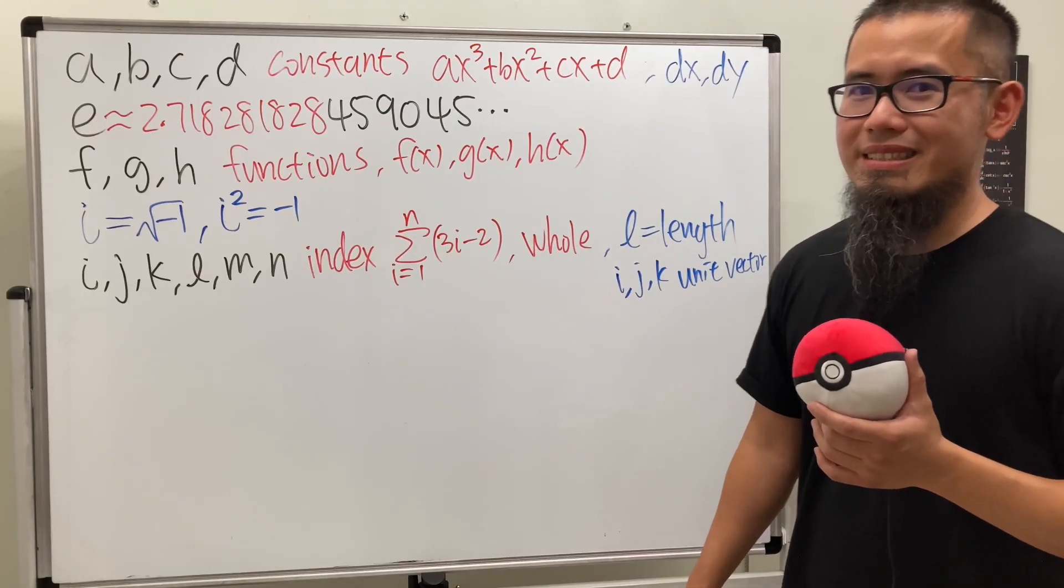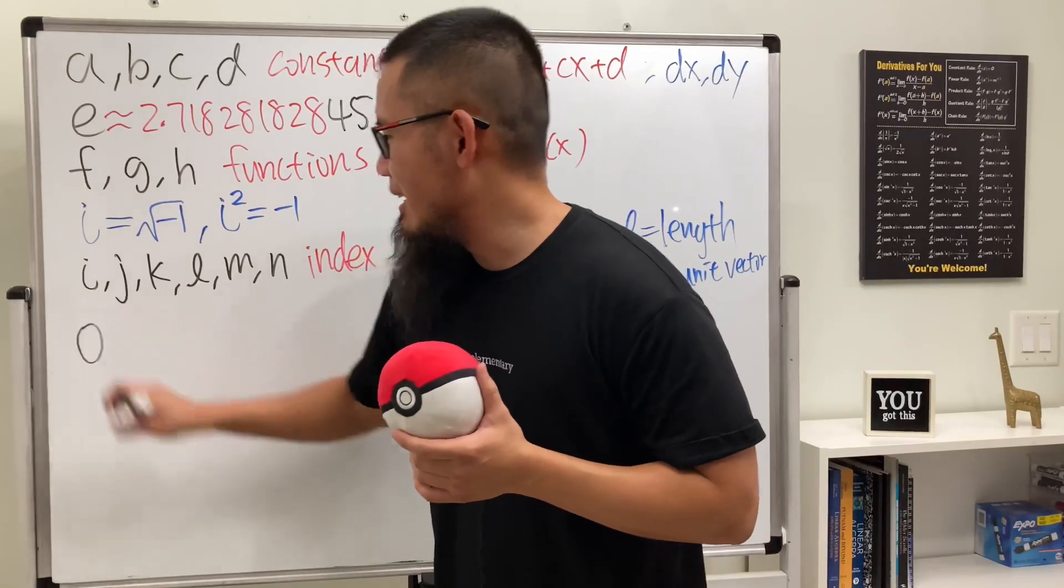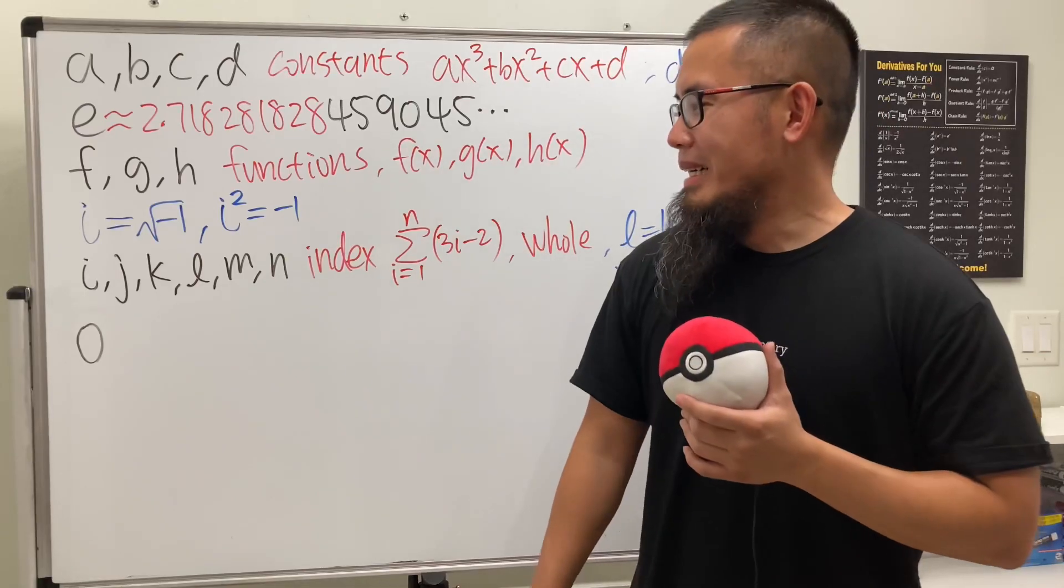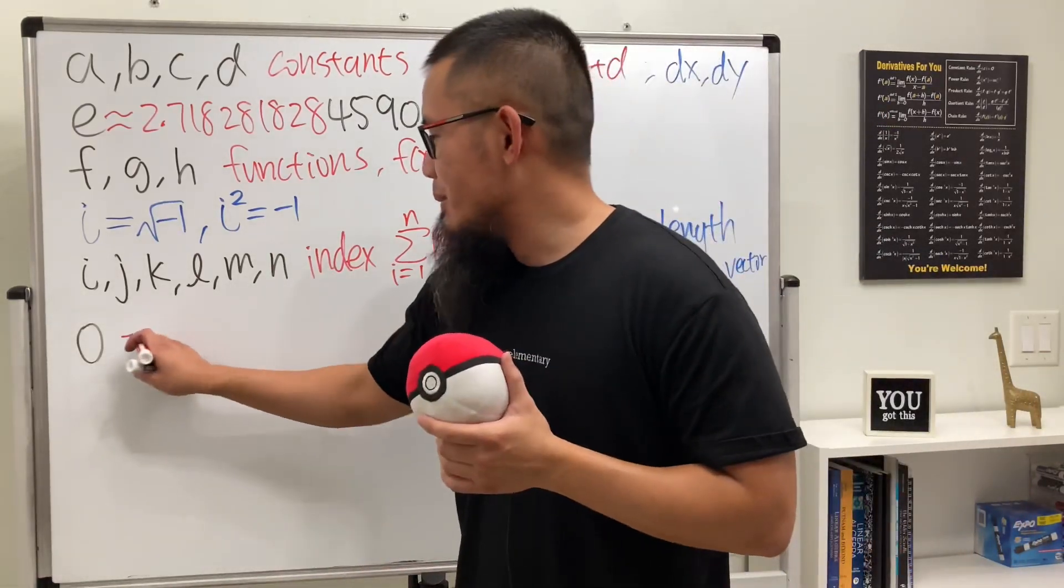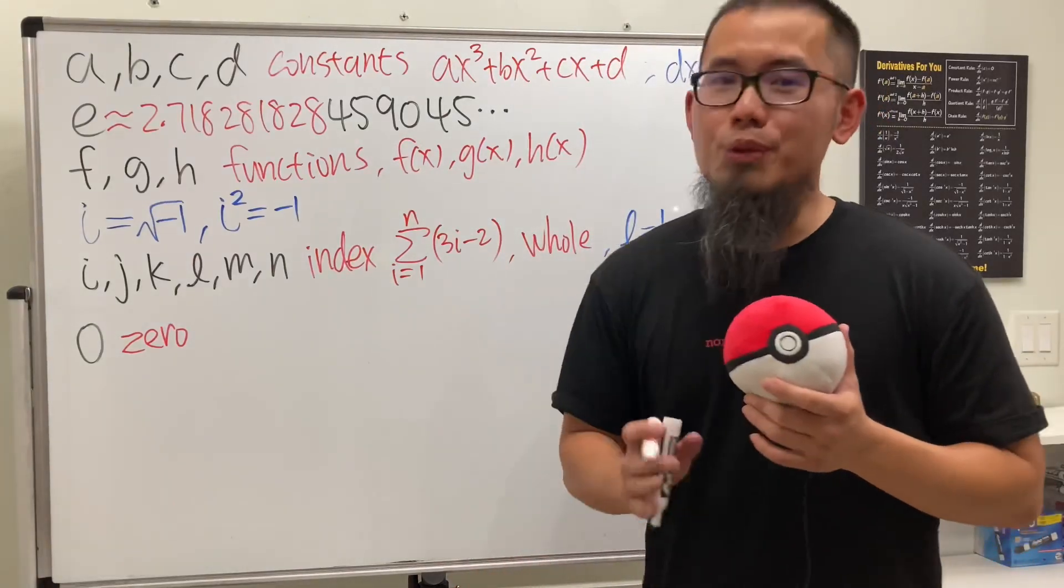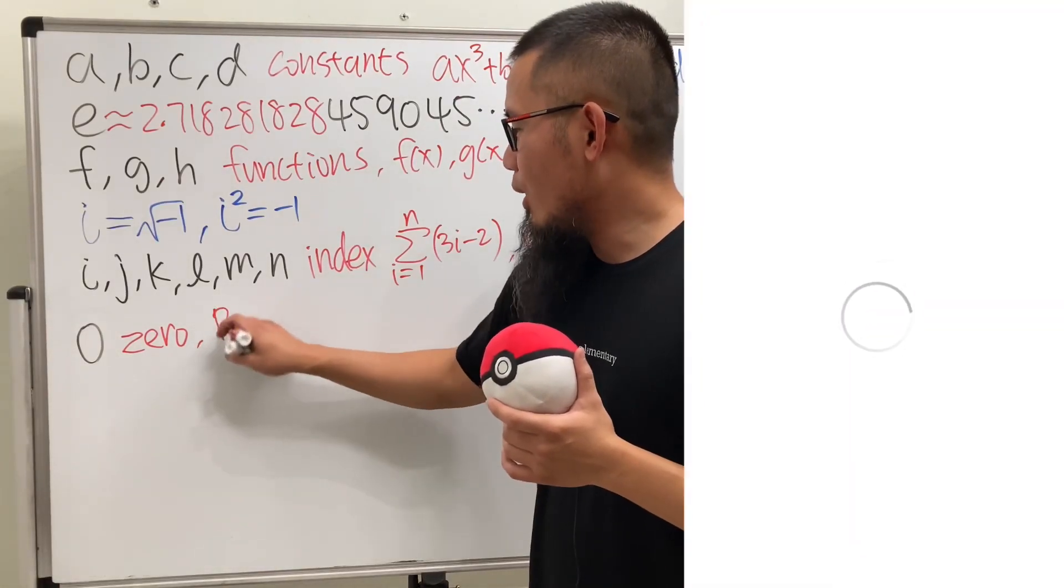What's next? Don't use o because it looks like zero, right? But we do use o at this place, so this is the only place I can come up with: the big O.